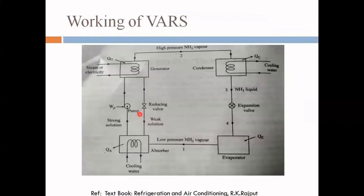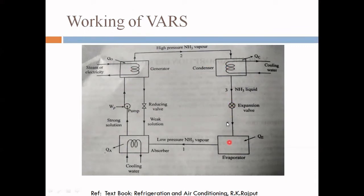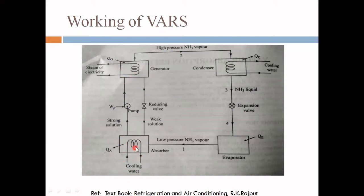Now for the working of the VARS: the parts are the absorber, generator, pump, and pressure reducing valve, followed by the condenser, expansion valve, and evaporator. The three components — condenser, expansion valve, and evaporator — are the same as in the vapor compression system. The four new components are the absorber, pump, generator, and pressure reducing valve. In the generator, steam or electricity is used to supply heat. In the absorber, cooling water is supplied to absorb the ammonia vapor.